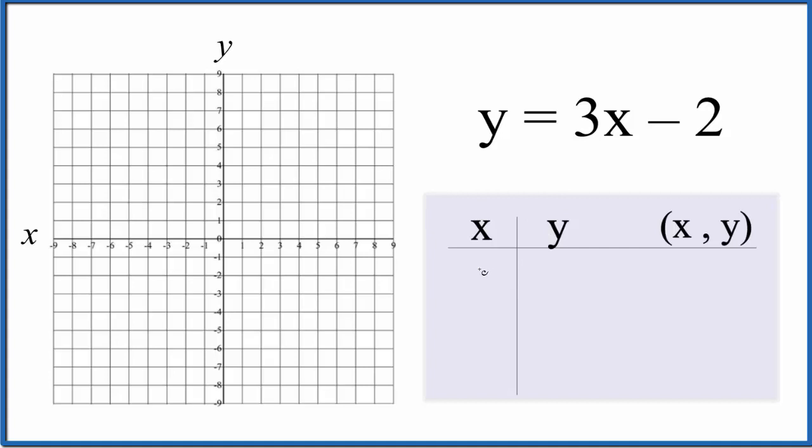So let's say x is 1. We'd have 3 times 1 minus 2, so that's 3 minus 2, which gives us 1. So our values for x and y are (1, 1). If we put 0 in for x, 3 times 0 minus 2, that's 0 minus 2, we end up with minus 2, and we have (0, -2) for our point.